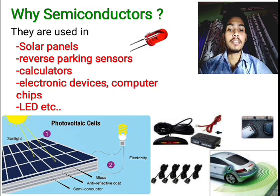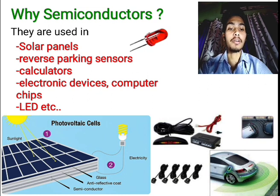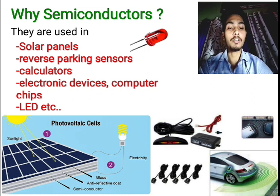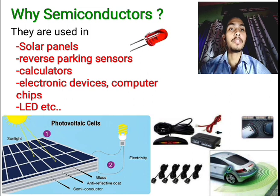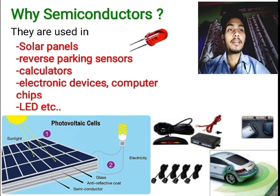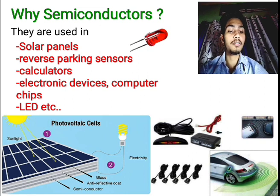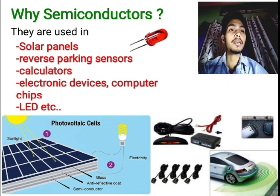Semiconductors find their application in solar panels, also called photovoltaic cells. Semiconductors are also used in car parking sensors, scientific calculators, computer chips, and LEDs. The full form of LED is Light Emitting Diode - L-I-G-H-T E-M-I-T-T-I-N-G D-I-O-D-E. You should note down the full form and spelling of LED. These are very common examples of semiconductor applications.